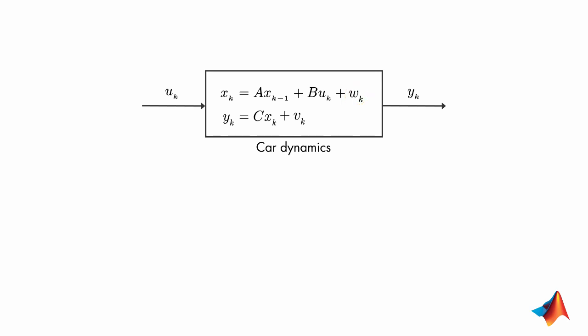Although these random variables don't follow a pattern, using probability theory we can tell something about their average properties. V, for example, is assumed to be drawn from a Gaussian distribution with 0 mean and covariance r.